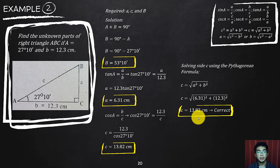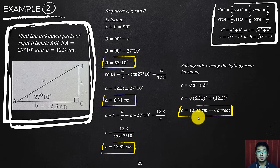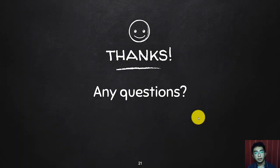Those are the methods — trigonometric functions and the Pythagorean theorem — that you can use to solve for all missing parts, whether sides or angles, of a right triangle. These methods are only for right triangles. When we go to other types of triangles, we'll introduce different formulas. If you have any questions, send them in our Canvas inbox, and I'll see you in the next video.